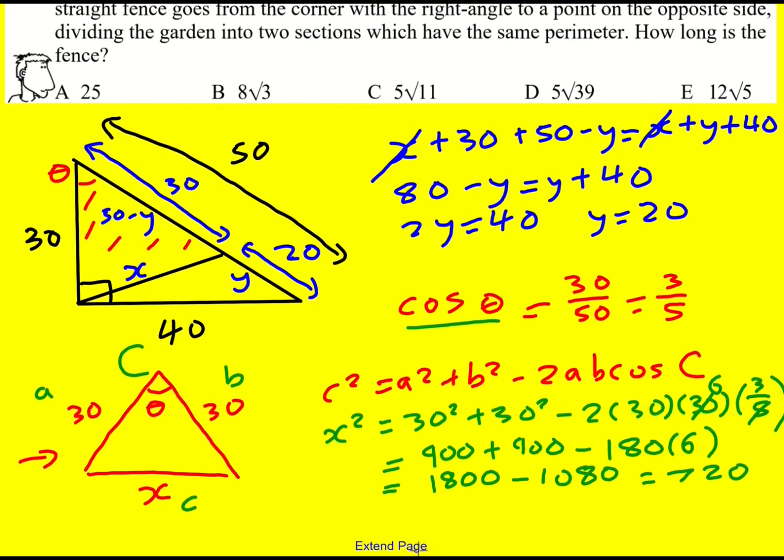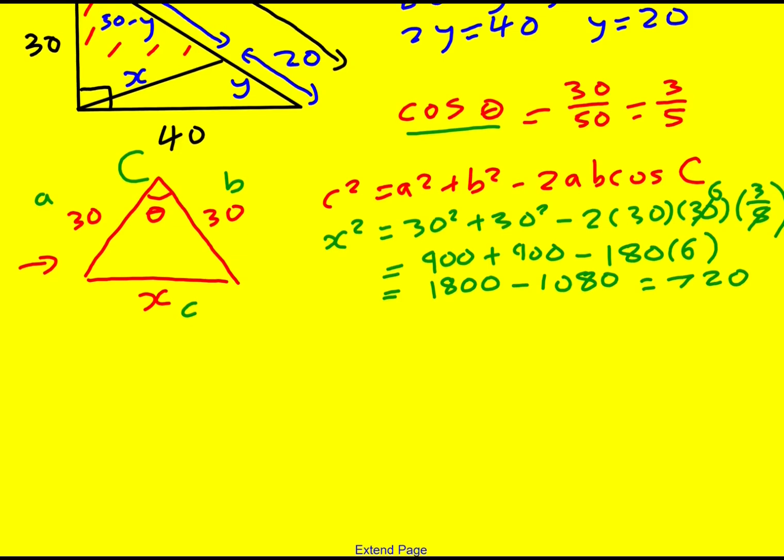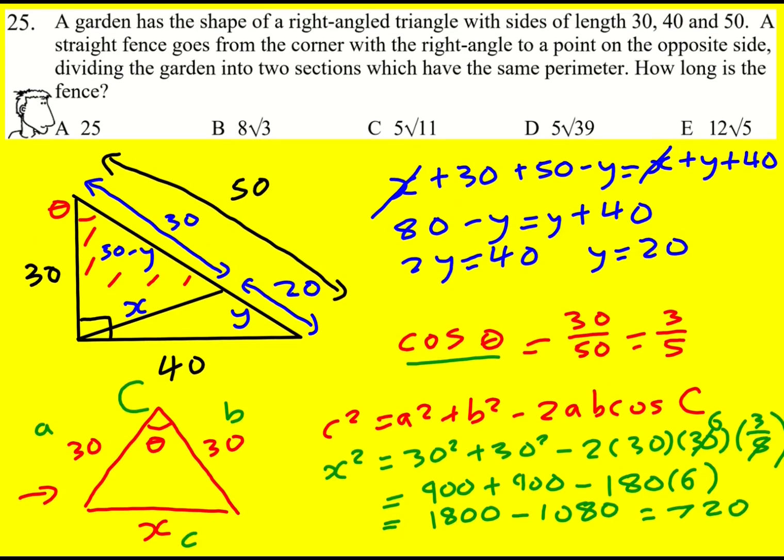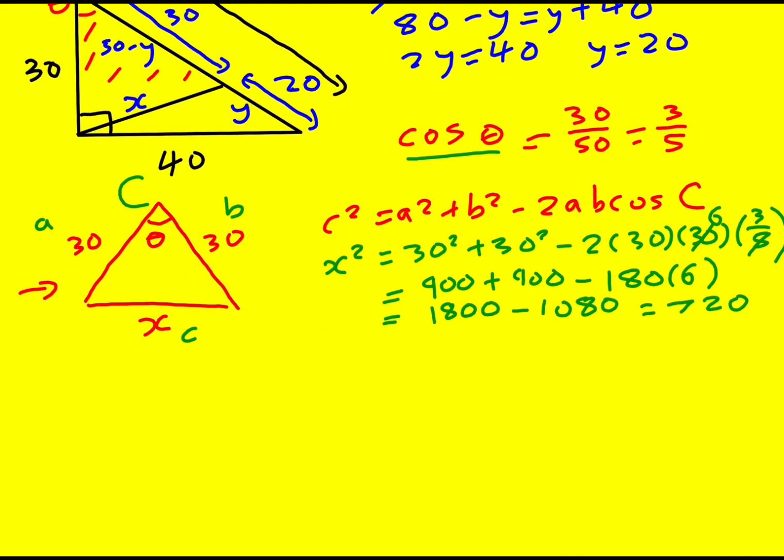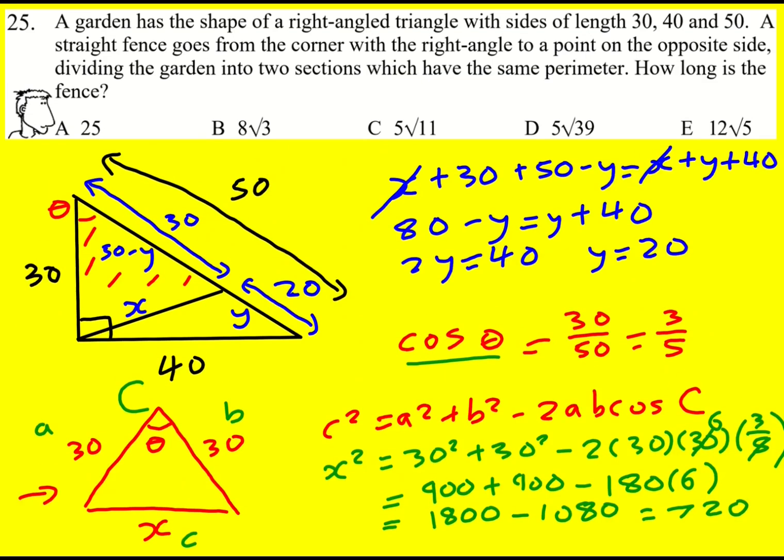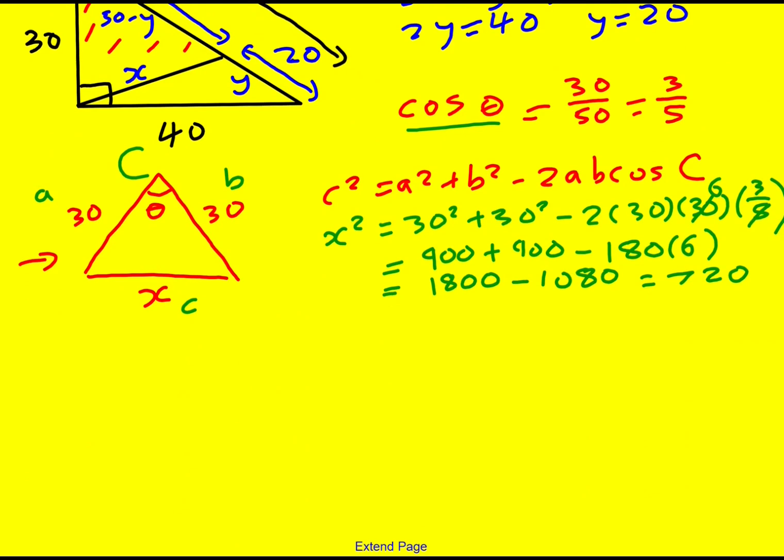So x squared is going to be 720. And we're nearly there because I just want to work out what x is. Hold on, the fence is x. Apologies.